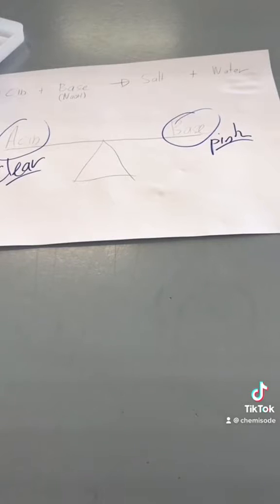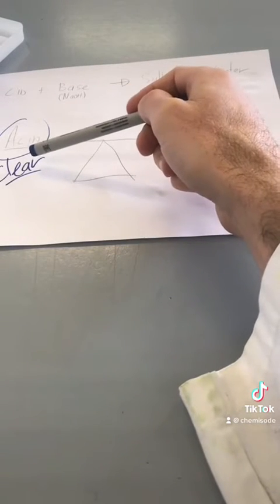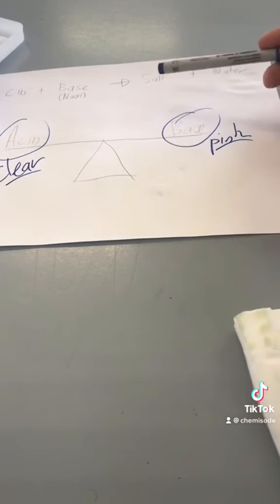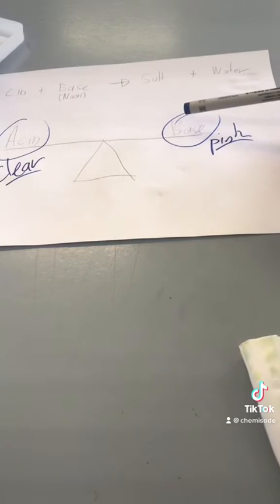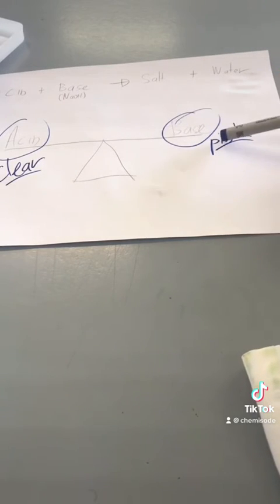This is another way of looking at it in terms of a seesaw. My acid was clear, that's what I started off with. So when I was clear I had lots and lots of acid. As I gradually added the base we would have come to this point where it's even and it's just a little bit pink.